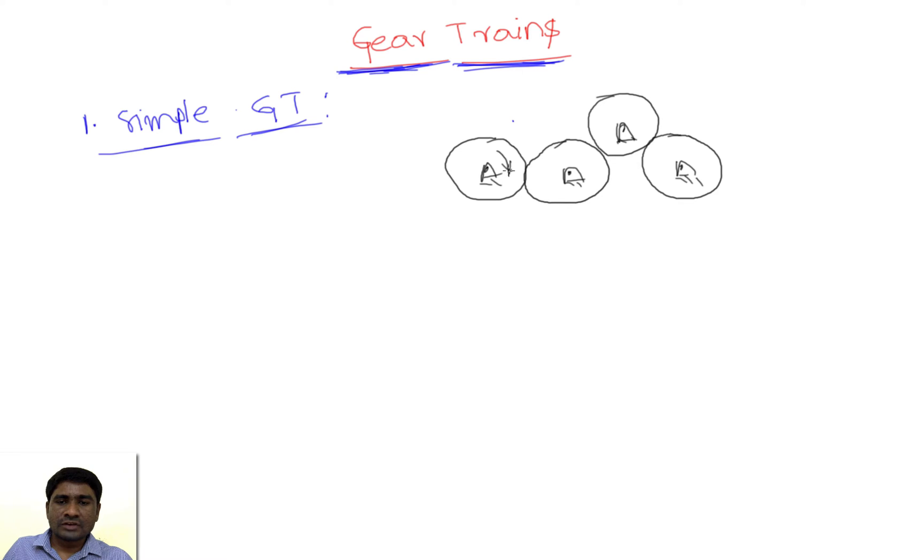For example, if it is rotating in the clockwise direction and it is externally engaged, this will rotate in the anti-clockwise direction, and in turn this will rotate in the clockwise direction. So this will rotate again in the anti-clockwise direction. Whenever two externally engaged gears are rotating, their directions are always opposite to each other. If I take internal gears, what happens in that case? Both gears which are in the engagement rotate in the same direction.